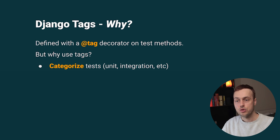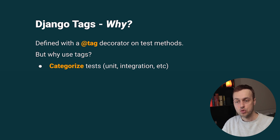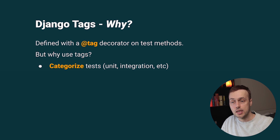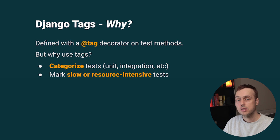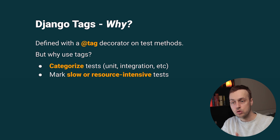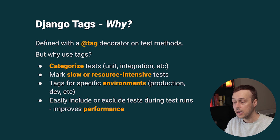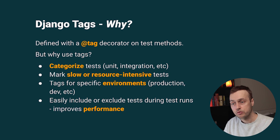Before writing any code, let's go over some examples of why you might want to use tags. Tags allow you to categorize your tests — for example as unit tests, integration, or end-to-end — so you can run only a specific subset or exclude a particular set. You can also use tags to mark tests that are slow or resource intensive, to define tags for specific environments like production only, and the big benefit is that you can easily include or exclude tests during runs, improving performance and saving time.